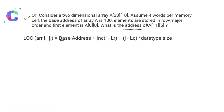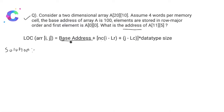To understand this practically, let's find the address of element A[11][5]. We have a 2-dimensional array of 20 rows and 10 columns. Assume 4 words per memory cell, the base address of array A is 100, elements are stored in row major order, and the first element is A[0][0]. What is the address of A[11][5]?